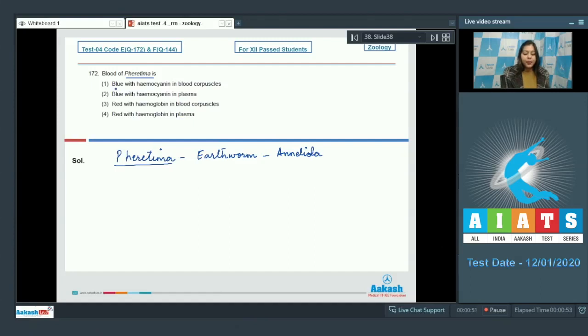Let us read the options. Blue with hemocyanin in blood corpuscles. This is incorrect as blood of Annelida is red. Blue with hemocyanin in plasma also incorrect. Number 3. Red with hemoglobin in blood corpuscles. This is also an incorrect option. Next option. Red with hemoglobin in plasma. This is a correct option.